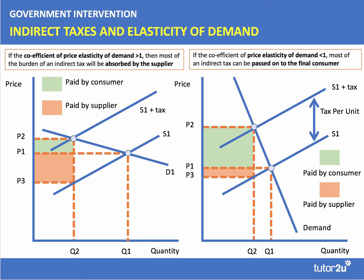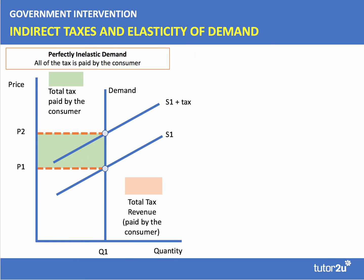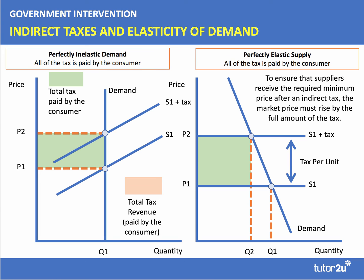The importance of elasticity is shown in extreme cases. If the demand curve is perfectly inelastic — in other words, the price elasticity is zero — we add a tax to the market, and in this example the tax is passed on in total to the consumer. The price rises from P1 to P2, so all of the tax is paid by the consumer.